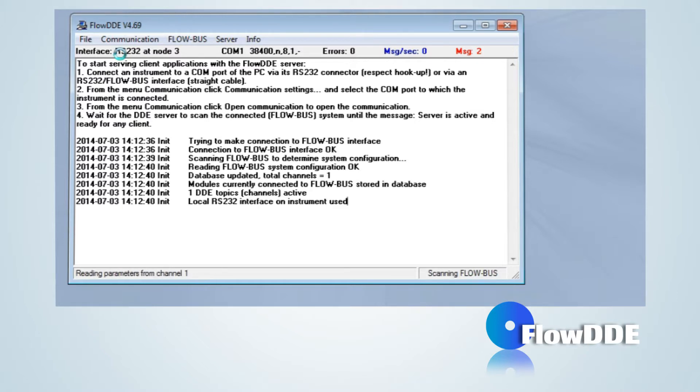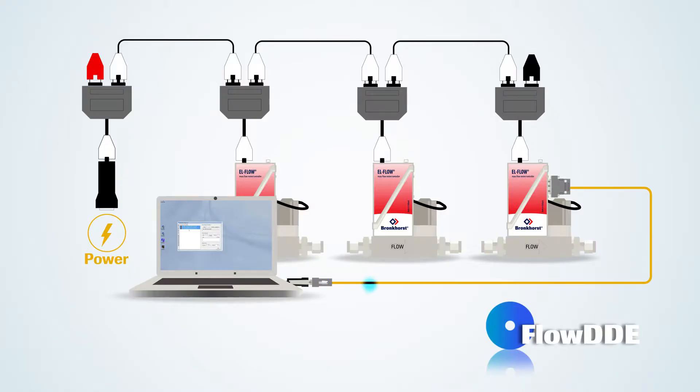Now Flow DDE makes a connection to the Flow Bus interface. Once a connection is established, Flow DDE will initialize the interface when needed and scan the connected Flow Bus when present.